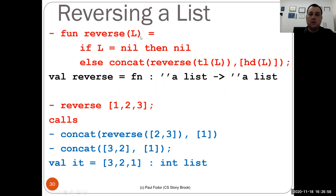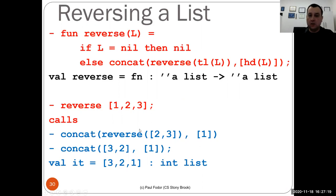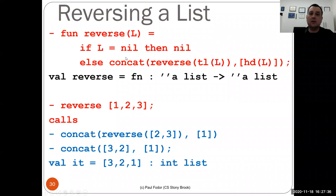If we call reverse of a list like [1, 2, 3], it calls the concatenation of the reverse of the tail — the reverse of [2, 3] — with the head of the list, the list containing one. Executing step by step, reverse is computed and we get [3, 2] concatenated with [1], giving us [3, 2, 1]. So this method works — reverse of a list works.